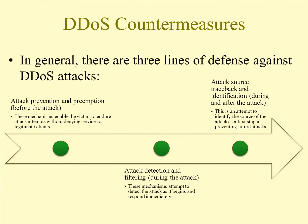How do we combat DDoS attacks? The first approach is attack prevention and preemption — before the attack — which is the best but also one of the hardest ways to do it. These mechanisms enable the victim to endure attack attempts without denying service to legitimate clients. Techniques include enforcing policies for resource consumption, providing backup resources available on demand, and modifying systems and protocols on the internet to reduce the possibility of DDoS attacks, which is being implemented in newer hardware and operating systems.